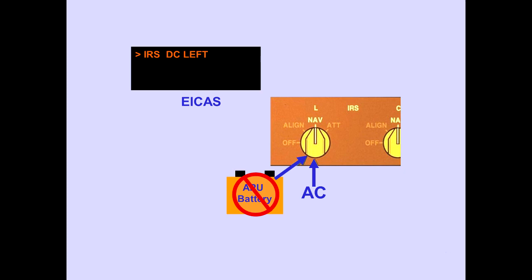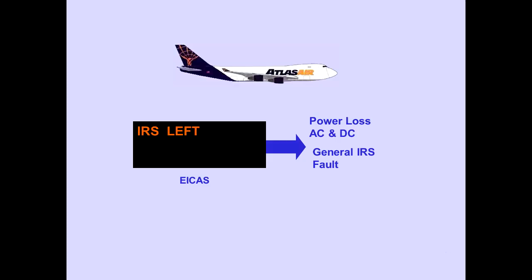The EICAS advisory message, IRS DC, indicates that DC power from the APU battery is not available. The EICAS advisory message, IRS left, center, or right, is displayed when an IRS fault is detected. Loss of AC and DC power is one such fault condition.